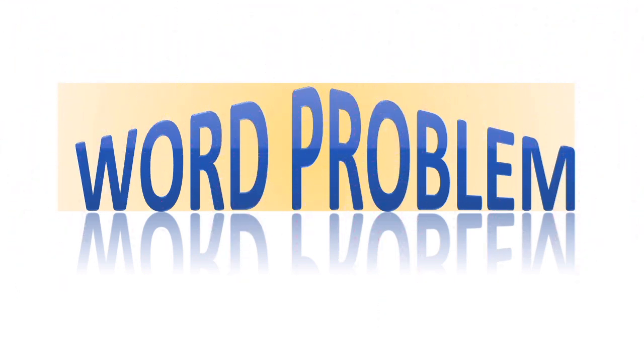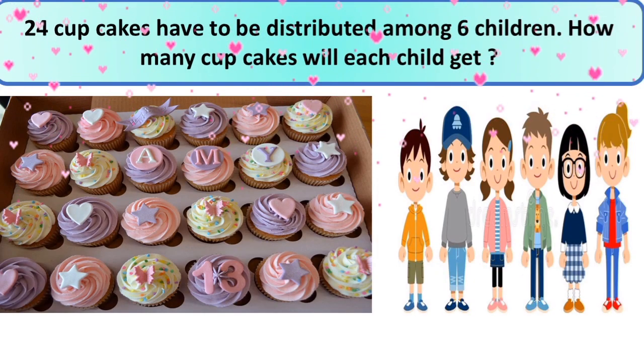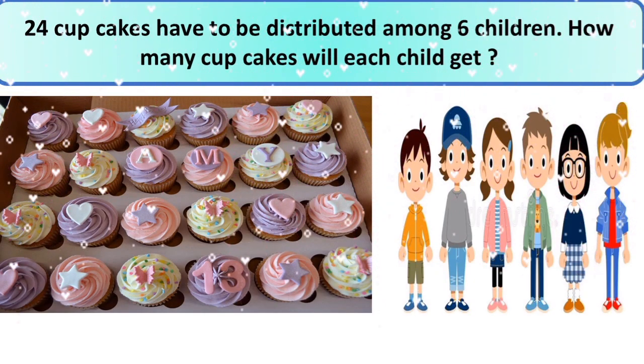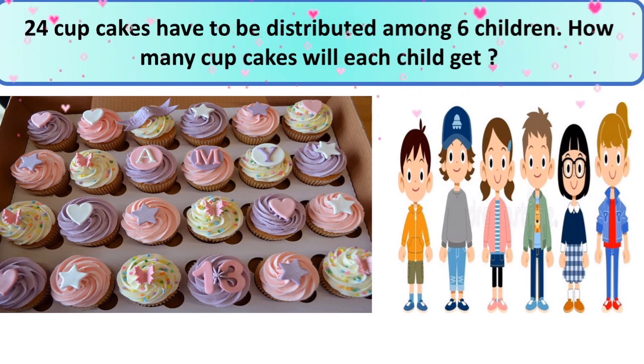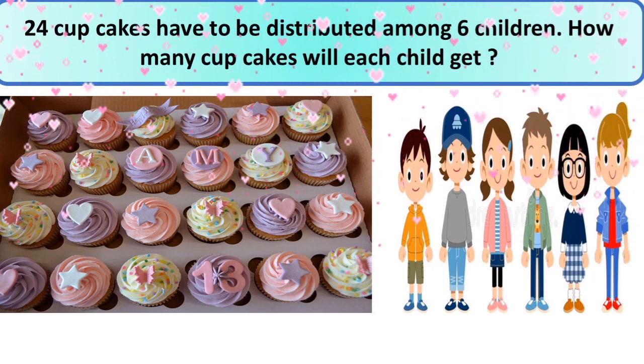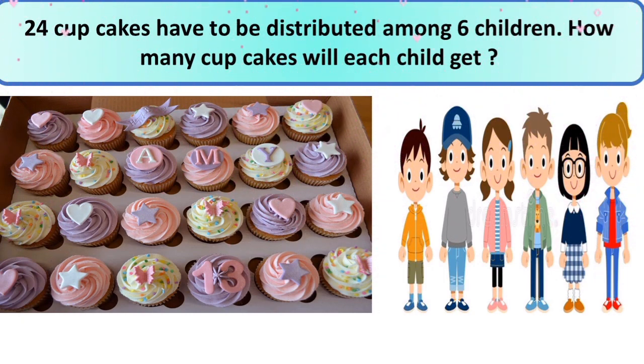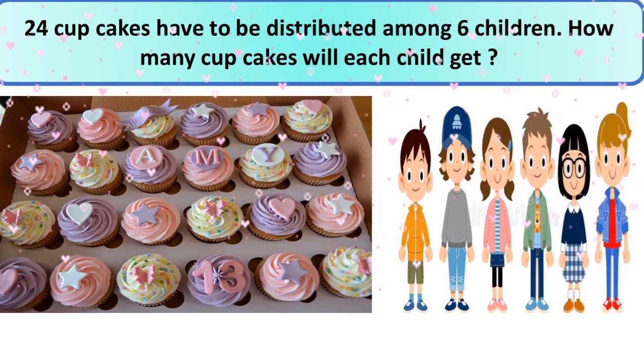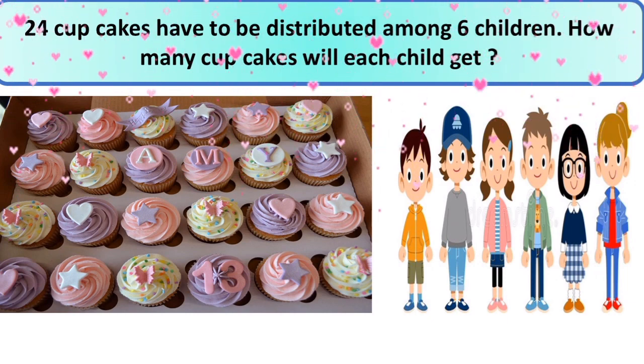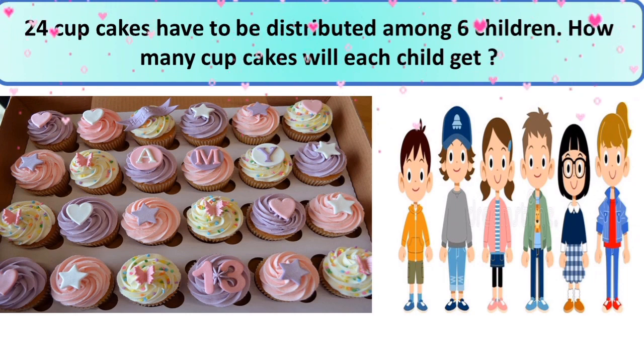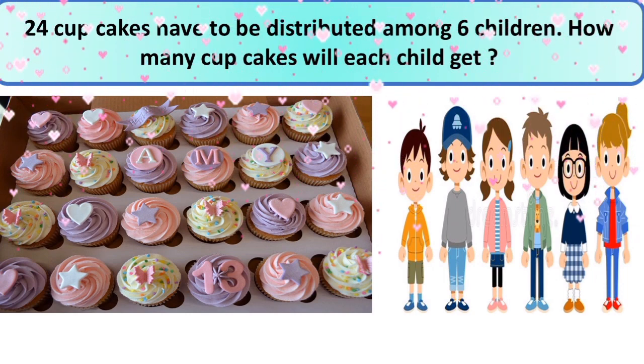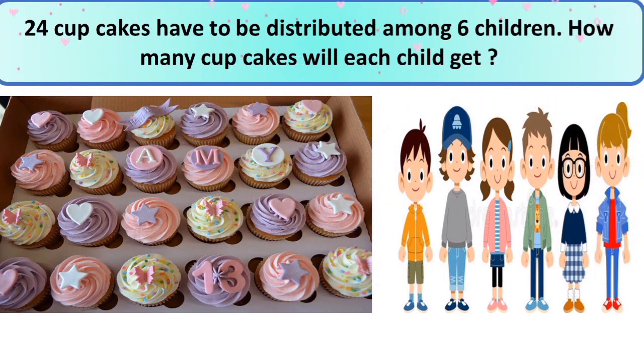Okay, your question is 24 cupcakes. Yes, you can see here there are 24 cupcakes to be distributed. You know what distributed means? This is a division sum. Yes, among 6 children. You have 24 cupcakes and now you are going to distribute to 6 children. How many cupcakes will each child get?